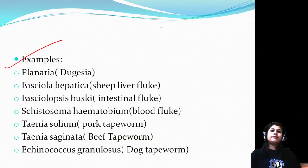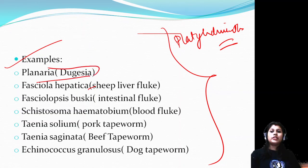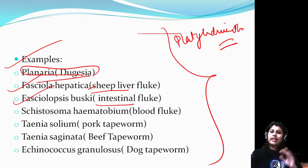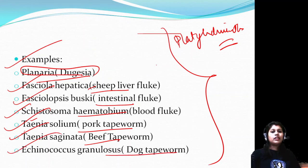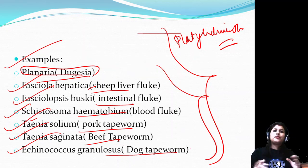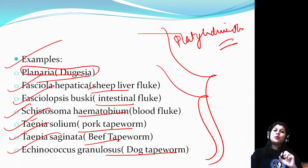Important examples of Platyhelminthes: Planaria, also known as Dugesia. Fasciola hepatica is the sheep liver fluke. Fasciolopsis buski is the intestinal fluke. Schistosoma haematobium is the blood fluke - it lives in blood. Taenia solium is the pork tapeworm. Taenia saginata is the beef tapeworm. Echinococcus granulosus is the dog tapeworm. These tapeworms are named after the host animal in which they complete their life cycle.